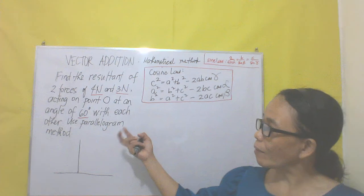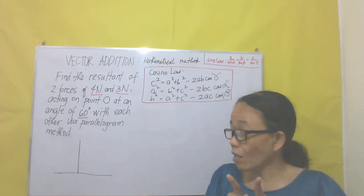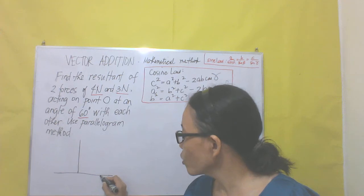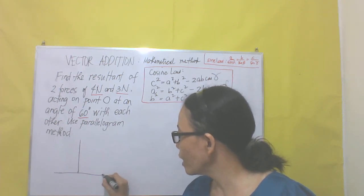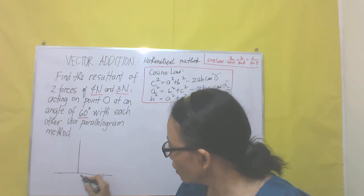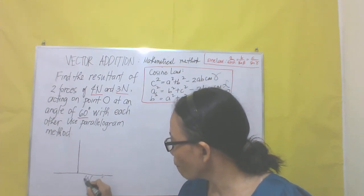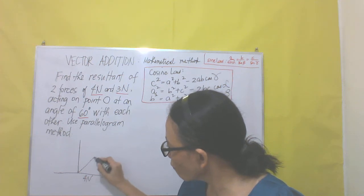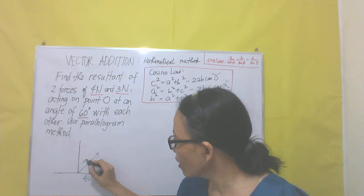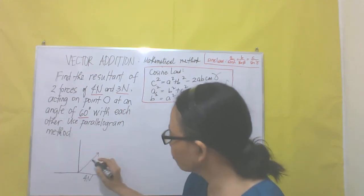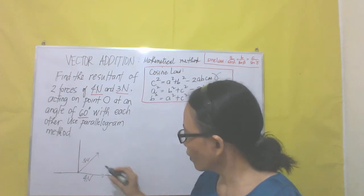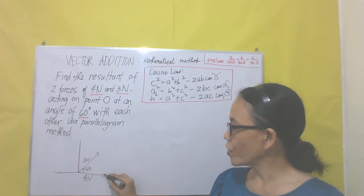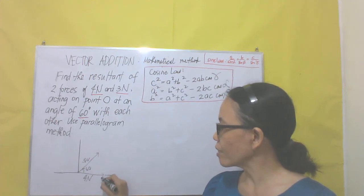So meaning to say that in this problem, the 4N force and the 3N force are forming 60 degrees. We let 4N be going to the east. So this is 3N, and this is 60 degrees. The two forces, 4N and 3N, are forming 60 degrees with each other.